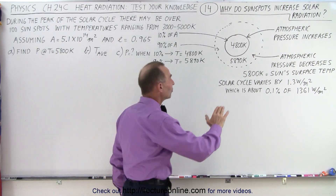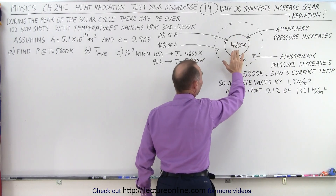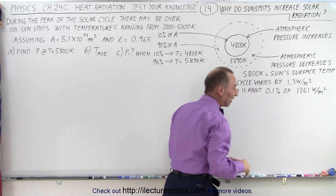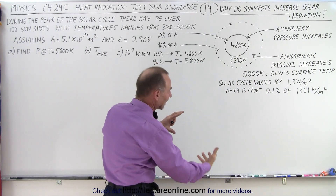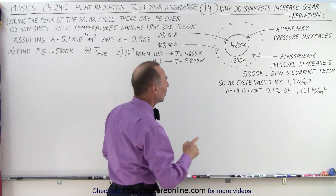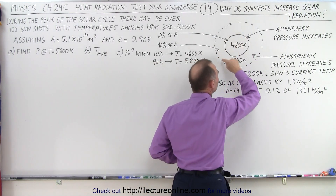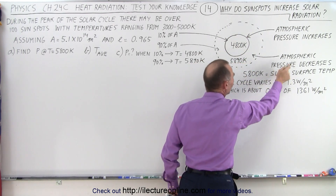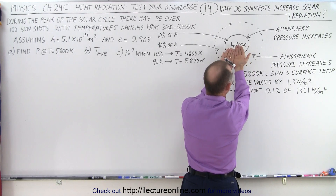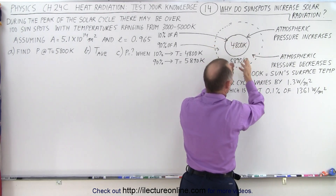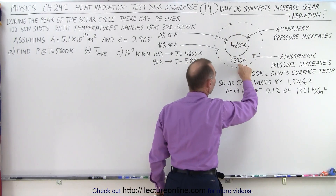What happens is that the pressure in the atmosphere of the Sun where the sunspot is has increased. That's caused by the magnetic fields holding back the heat coming up from the surface of the Sun, which causes the atmospheric pressure around the sunspot to increase. That increased pressure causes the additional heat that normally would come where the sunspot is to come to the surface around the sunspot, raising the temperature around it by just a little bit.